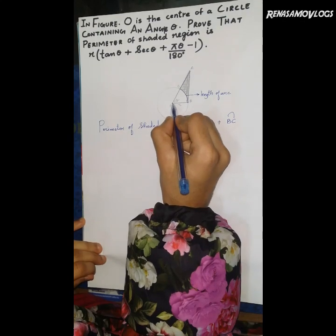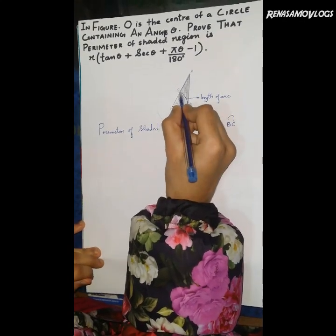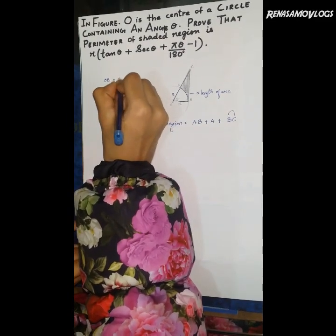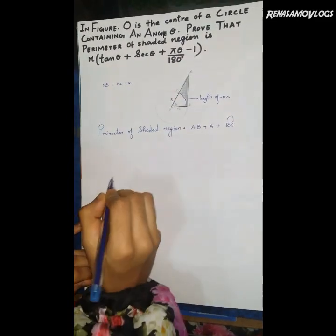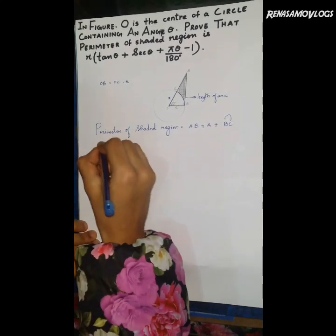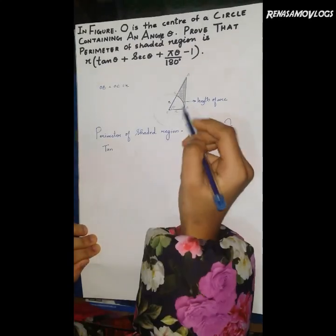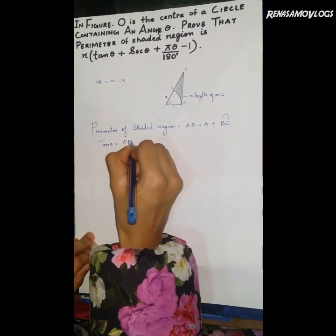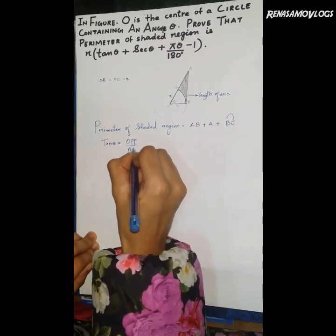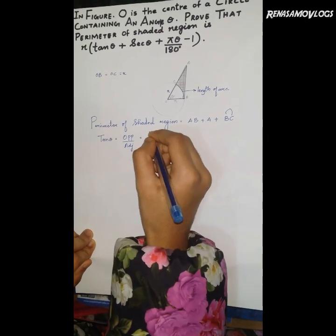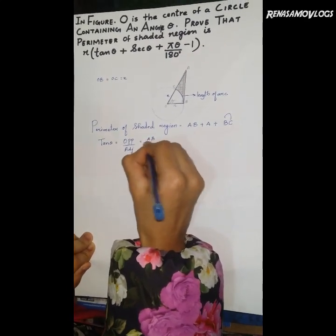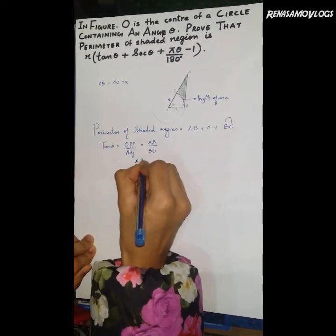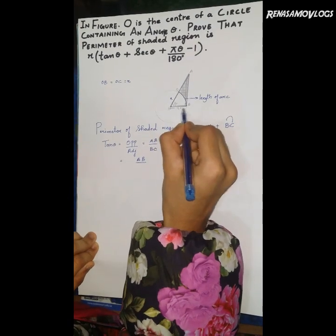If OB is R, then OC is also R, so OB and OC are R. By tan theta, we can find opposite by adjacent: AB by BO. BO is given as R.